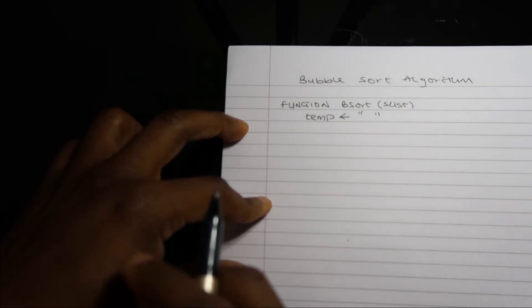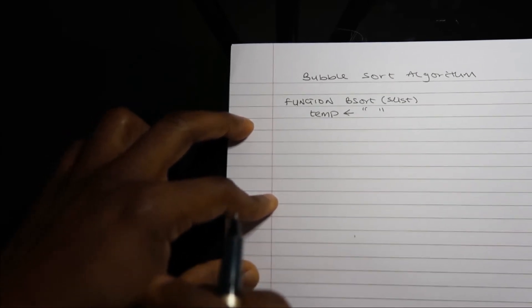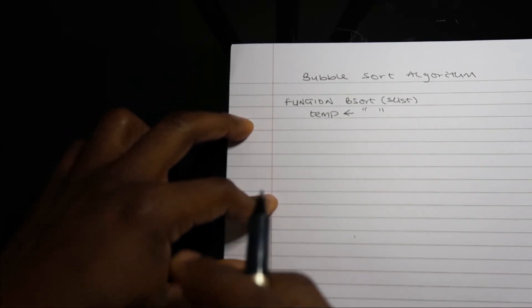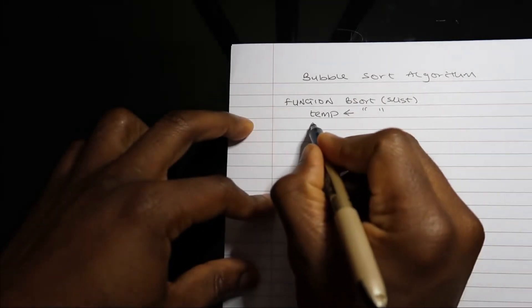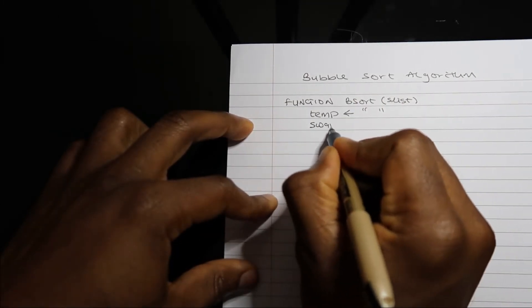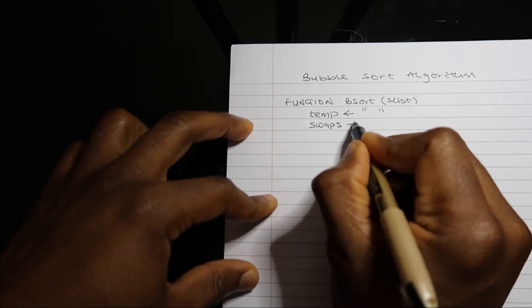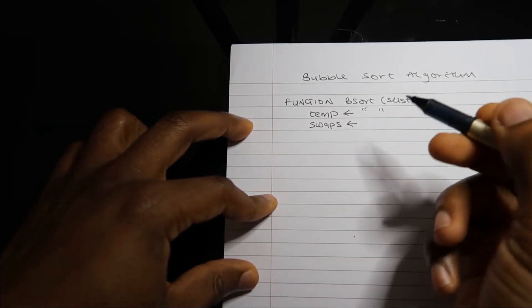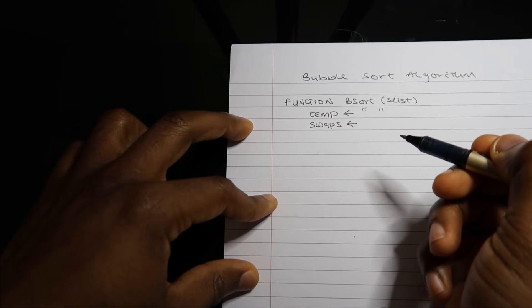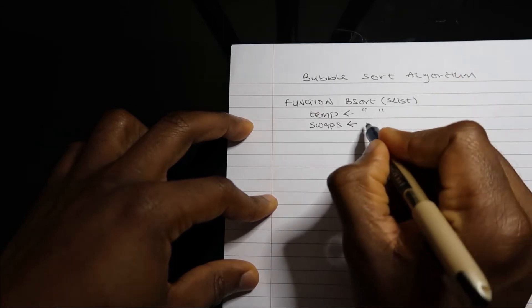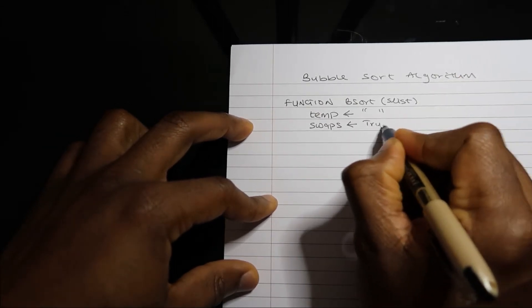The next thing I'll do is create a boolean variable for my swaps, because I need to be able to check if I've got swaps occurring. To go into my iteration, I'll set swaps as true.